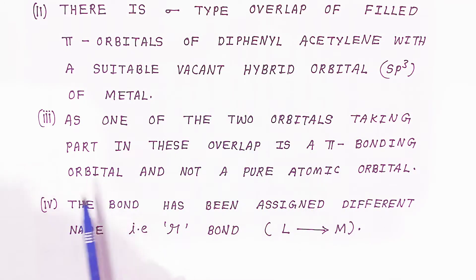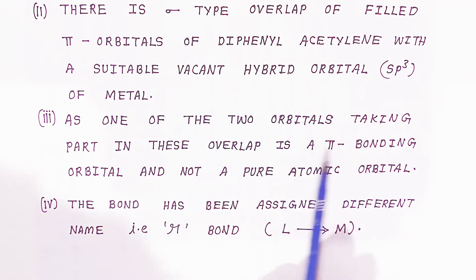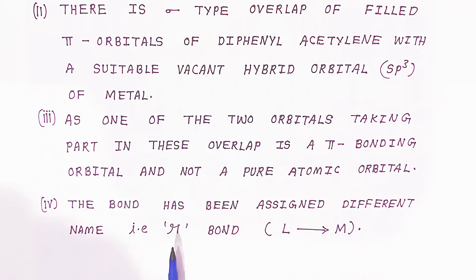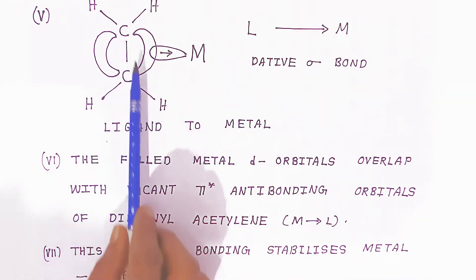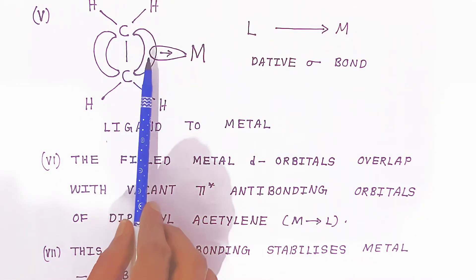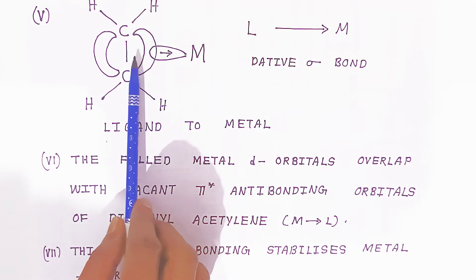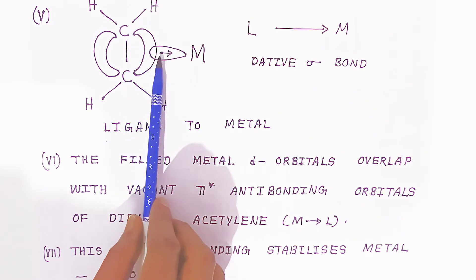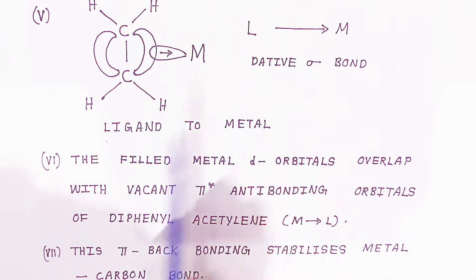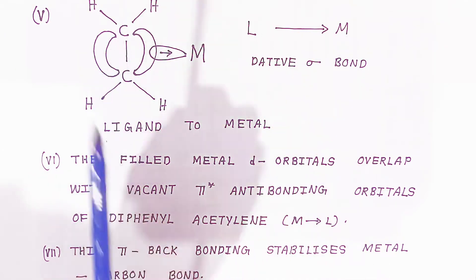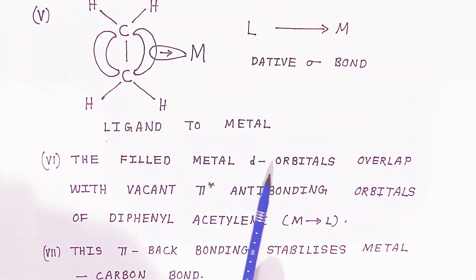Since one of the two orbitals taking part in the overlap is a pi bonding orbital and not a pure atomic orbital, they mix and form the pi bonding. This bond is assigned a different name — it is called a mu bond. From ligand to metal we call it a mu bond. Because electrons are donated by the ligand, we show the arrow from ligand to metal; this is called a dative sigma bond, ligand to metal.